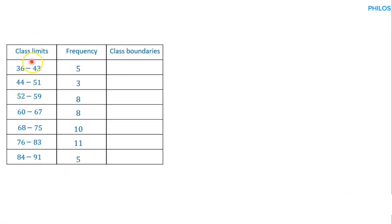That value is also called the class boundaries correction. We need that value to deduct from the lower class limit and add it to the upper class limit — it's just like robbing Peter to pay Paul. The lower class limit is Peter and the upper class limit is Paul, and we need to know the amount we'll be robbing from Peter and giving to Paul.